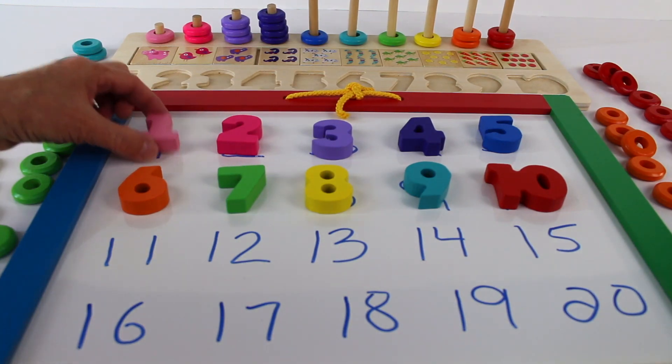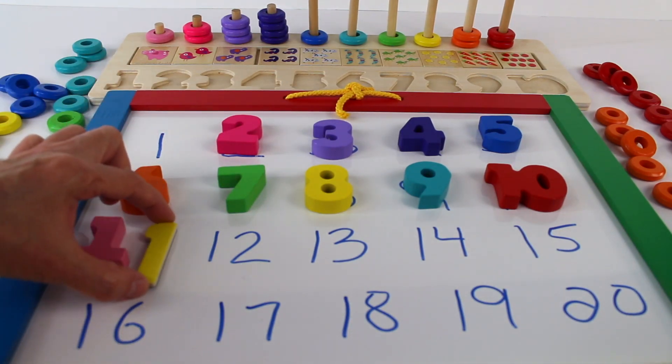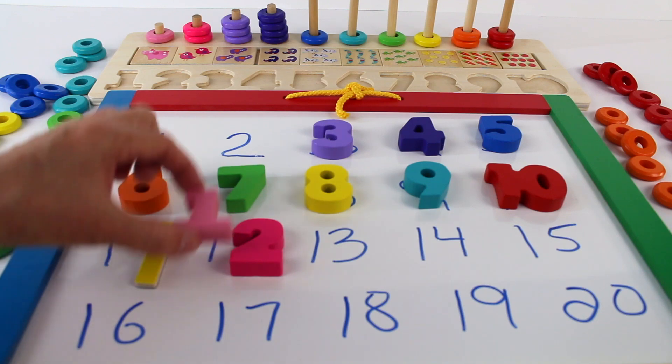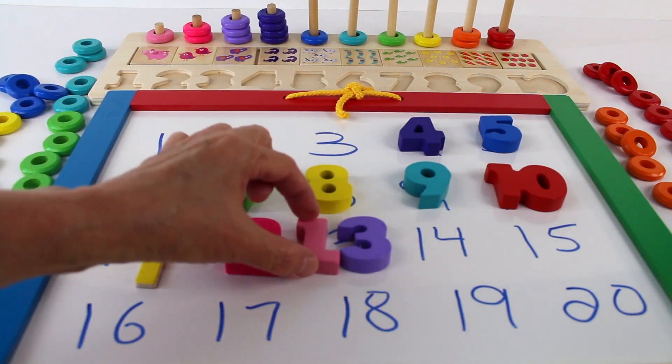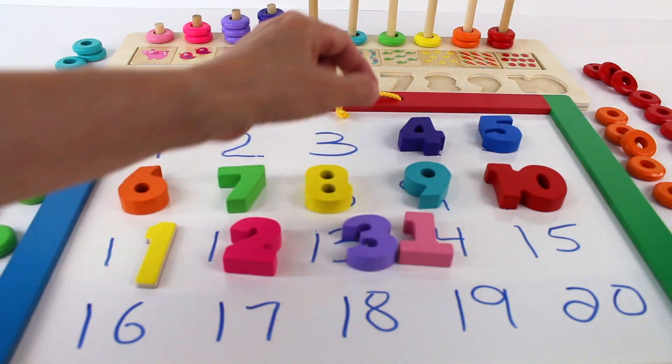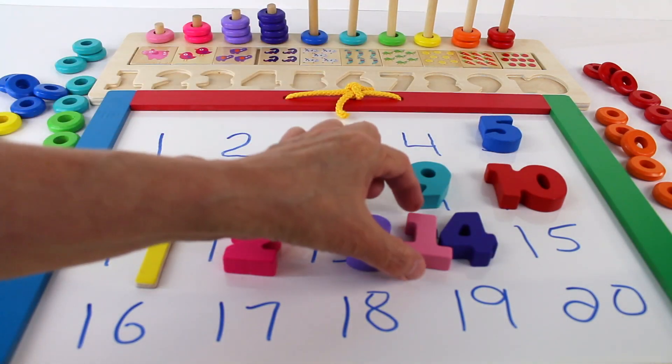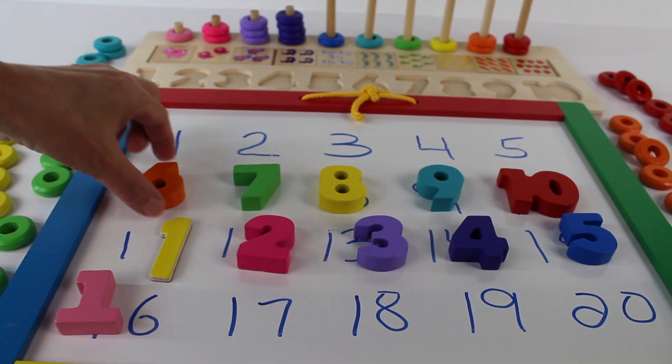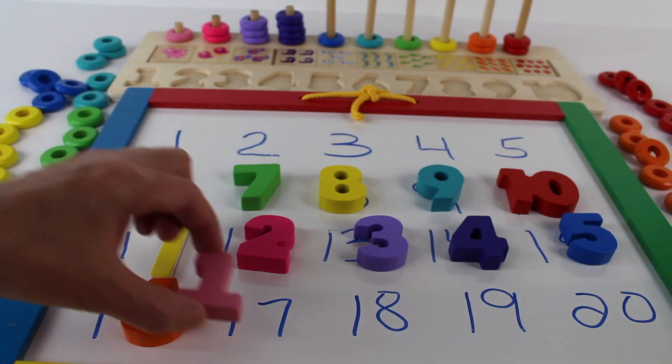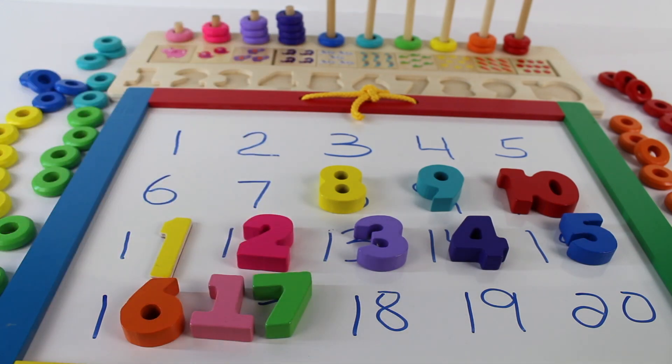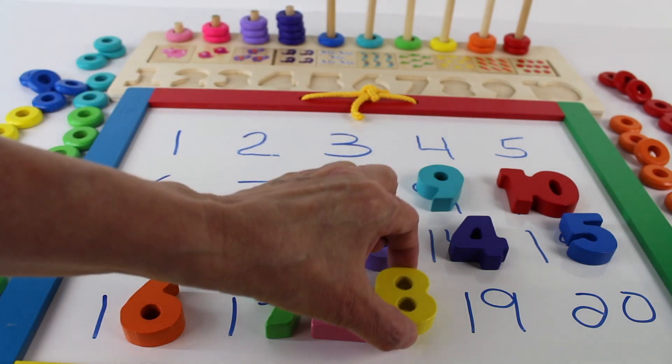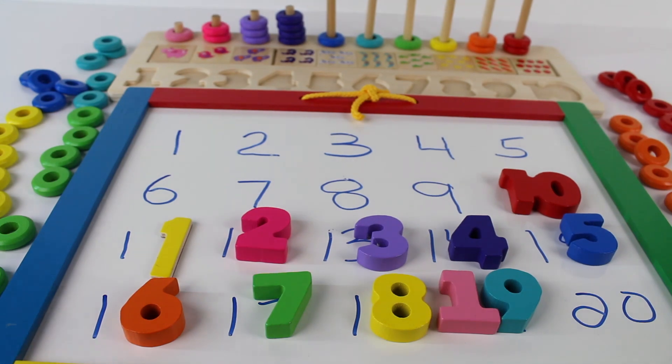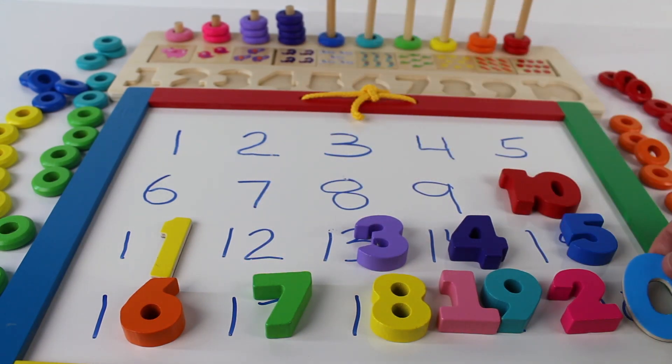Now let's take the 1 and we need another 1 to make 11. A 1 and a 2 make 12. 1 and 3 make 13. 1 and 4 make 14. 1 and 5 make 15. 1 and 6 make 16. 1 and 7 make 17. 1 and 8 make 18. 1 and 9 make 19. 2 and 0 make 20.